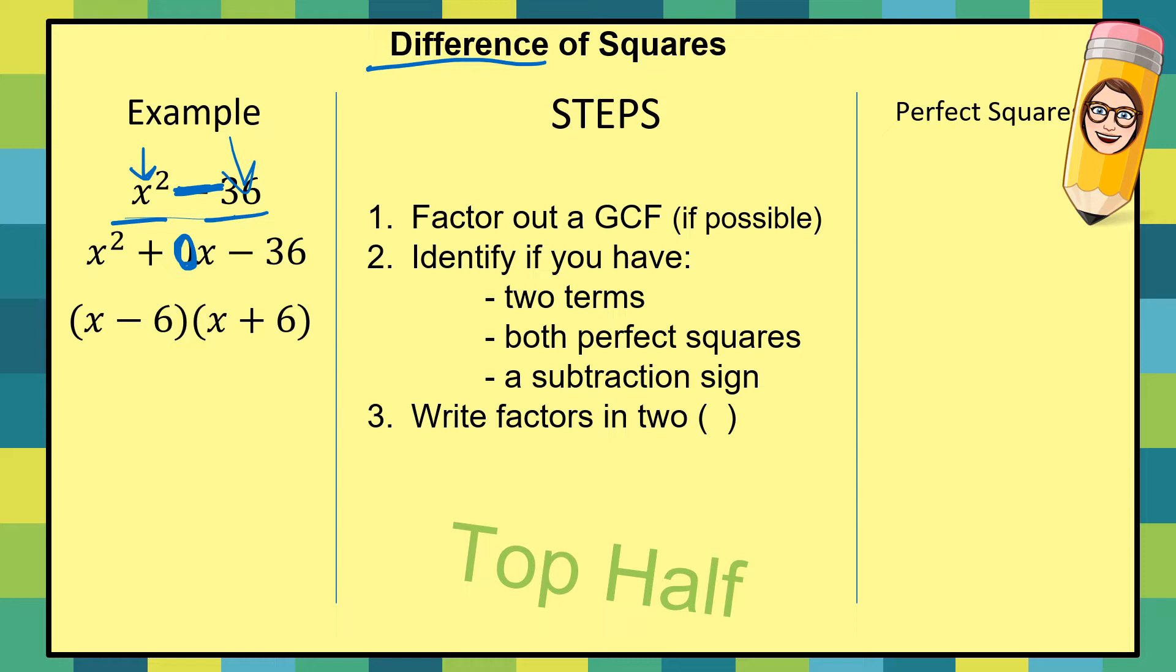If you have two perfect squares, a subtraction sign in the middle, then you can write your factors in two parentheses. And then you can just check. So it'll always be x minus, x plus, and then whatever that perfect square value is broken down.